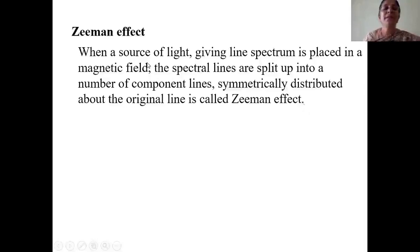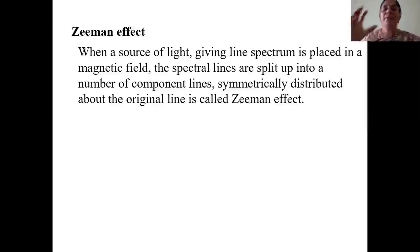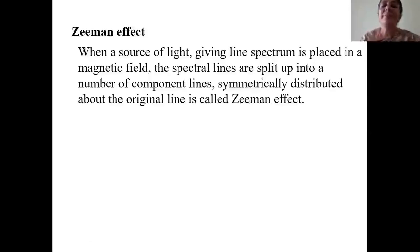Zeeman chose a spectrometer with high resolving power and also chose a light source giving out a line spectrum. A lamp can give a spectrum that may be continuous spectrum, line spectrum, or band spectrum. Zeeman did not choose a lamp giving out continuous spectrum or band spectrum.